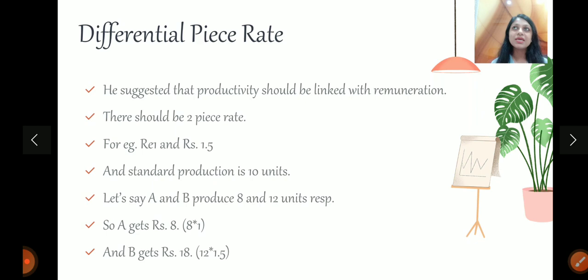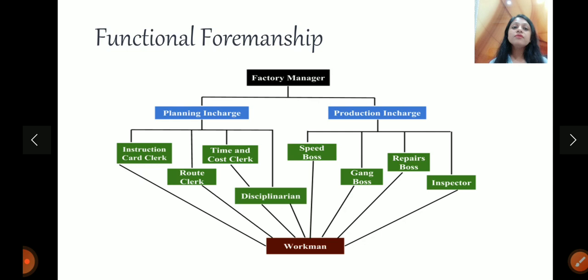Then came functional foremanship. Foremen, as I told you, foremen are the people who are supervisors, who take care of their workers. So he said, earlier what used to happen, all the labor had one foreman, one supervisor. But he said, it should not be like that. You should make different foremen, who focus on different tasks.